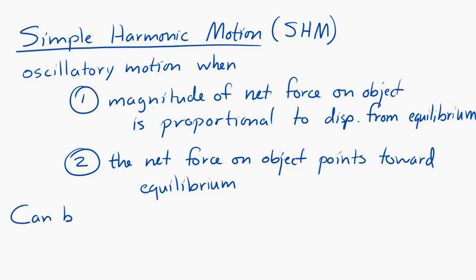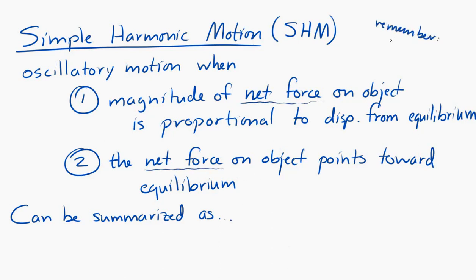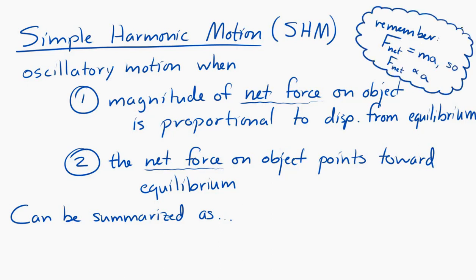We can summarize these two conditions in a single mathematical statement. Remember Newton's second law: F_net = ma, so the net force is always proportional to the acceleration. Therefore, the two conditions for simple harmonic motion can be written as: A is proportional to negative x. In words, the acceleration is proportional to, and in the opposite direction of, the displacement from equilibrium.